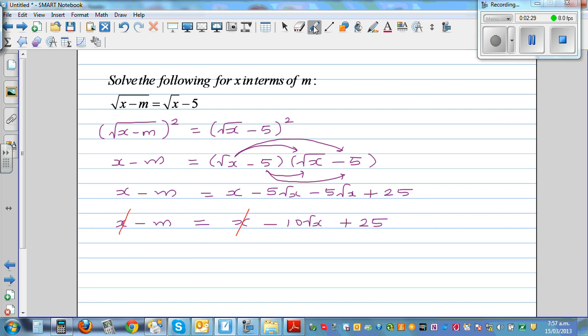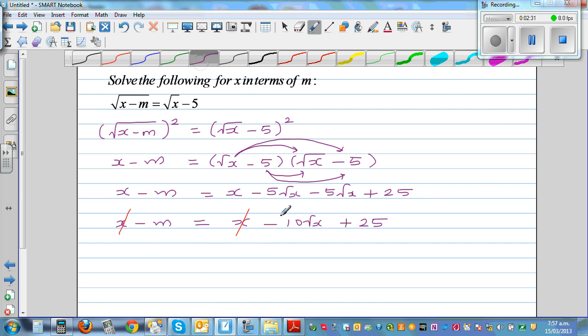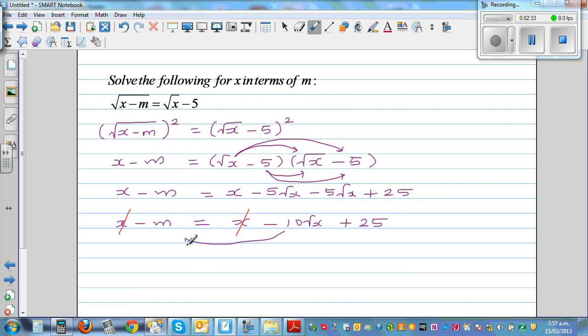Let's isolate the x on one side. I'm going to bring this to this side and this to this side. You are adding 10 root x to both sides and adding m to both sides. So this becomes 10 root x equals m plus 25.